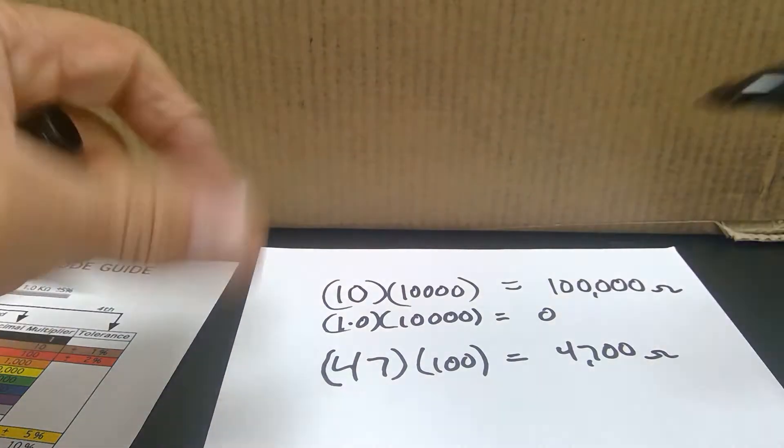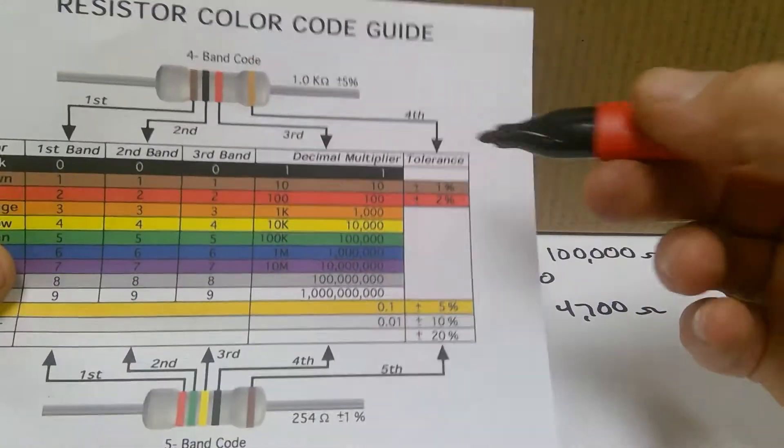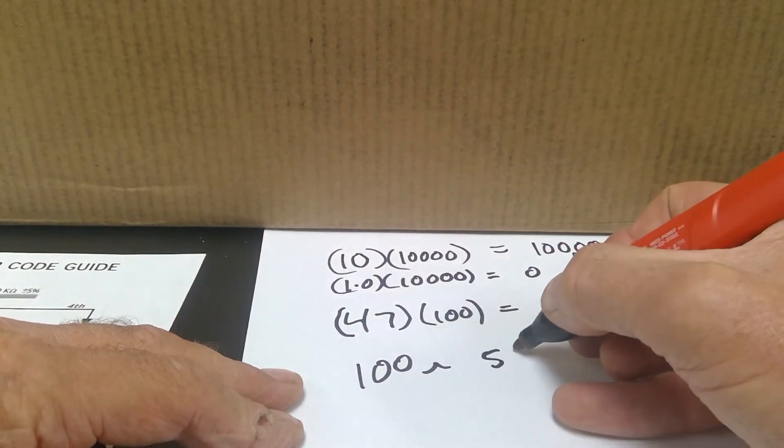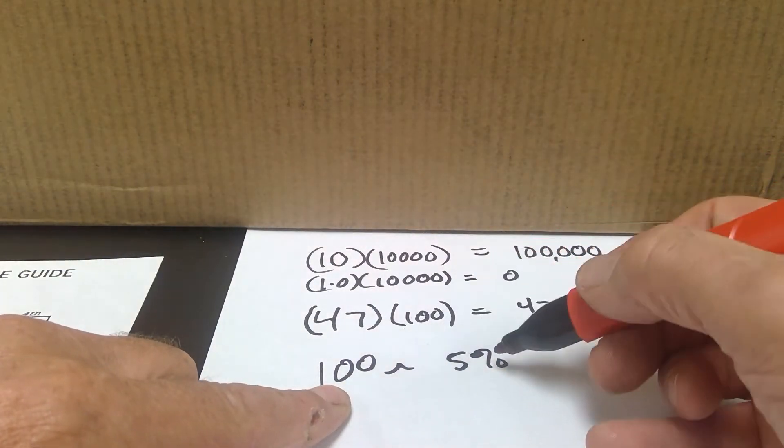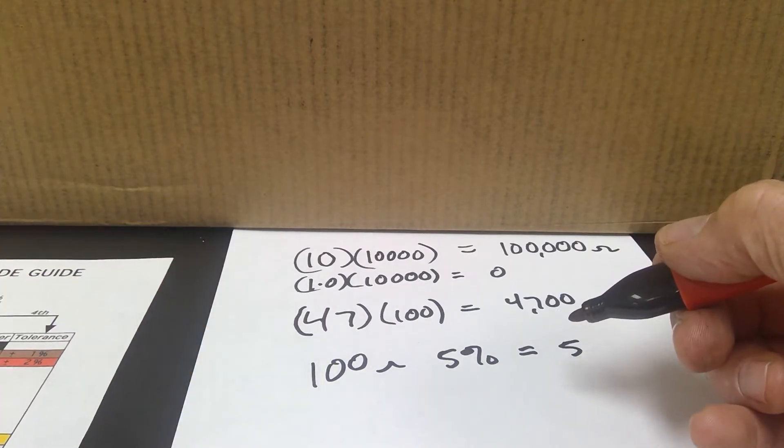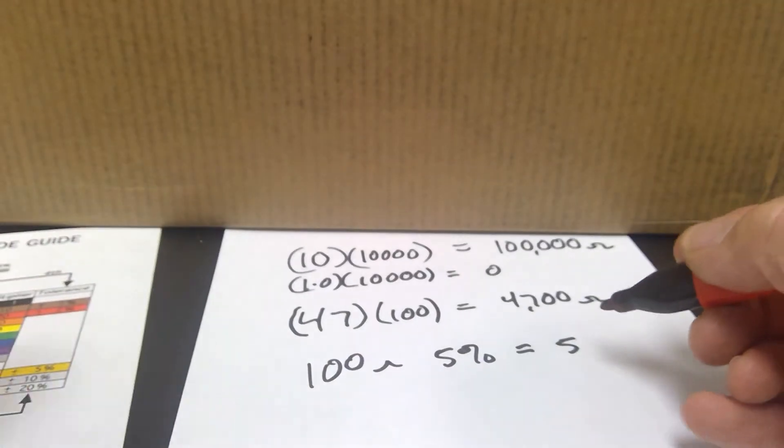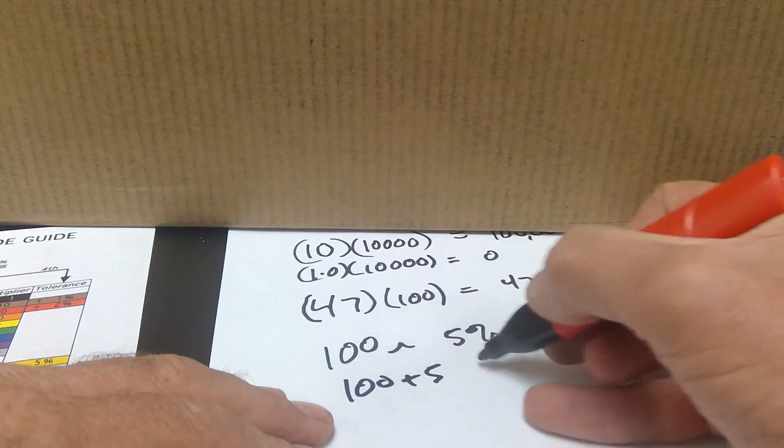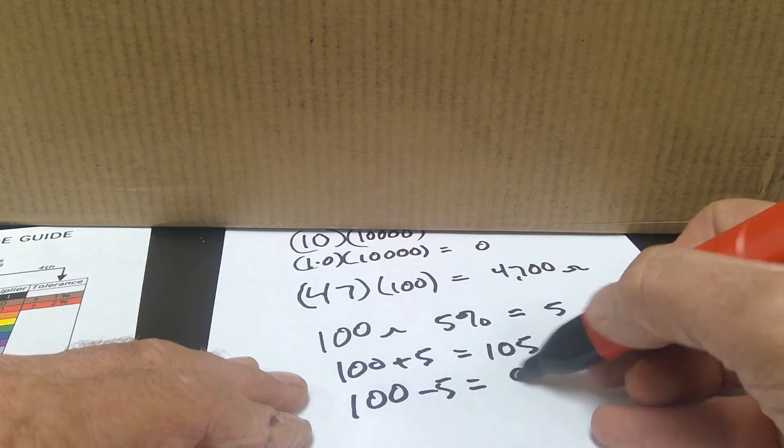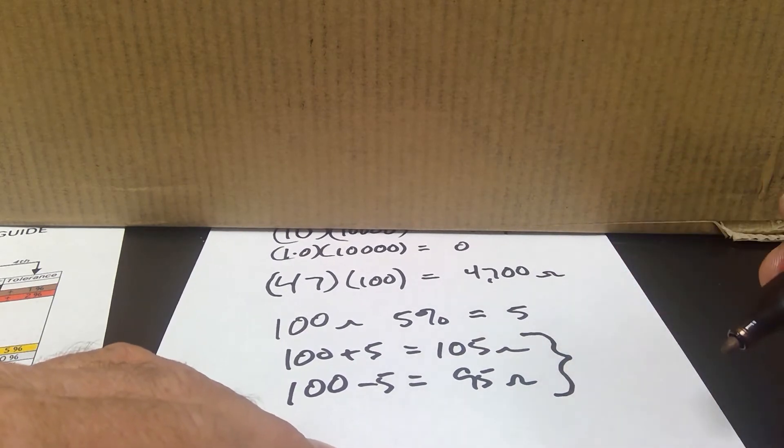So as an example, if I have a 100-ohm resistor and I have a tolerance band that's gold, I come down here to gold, I see that's 5%. So it's 100 at 5%. So I multiply 100 times 5%, and I come up with the number 5. Now, notice that here it shows plus or minus 5%. So 100 plus 5 equals 105 ohms. 100 minus 5 equals 95 ohms.